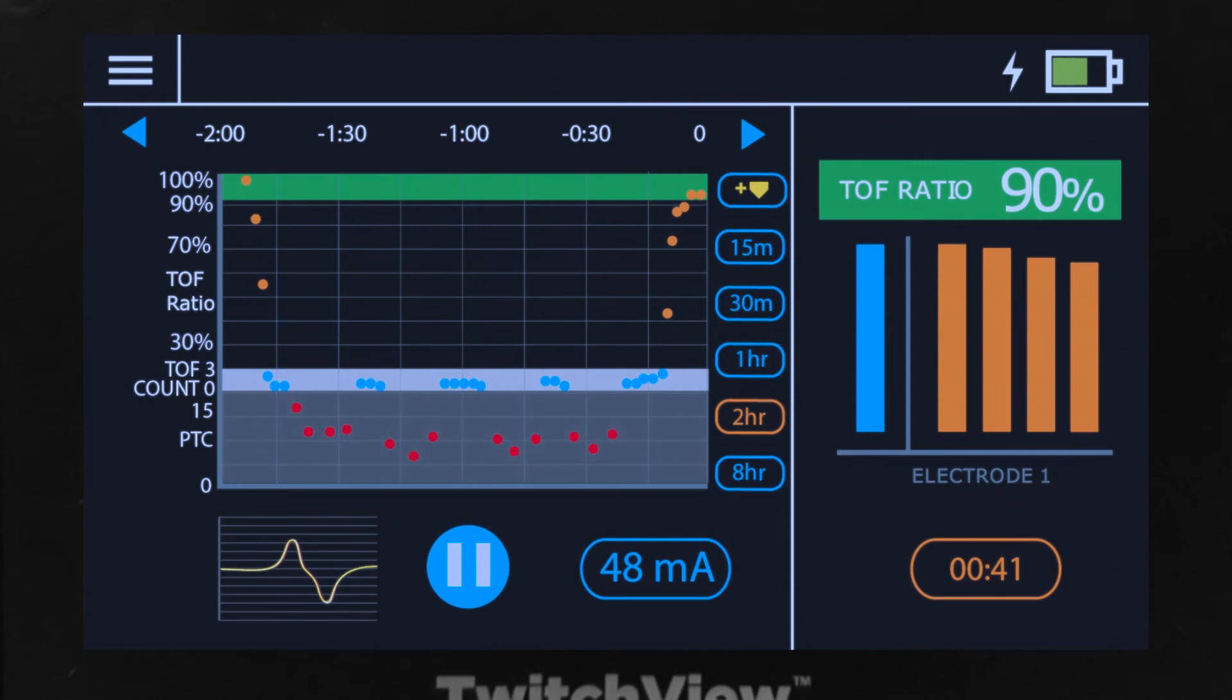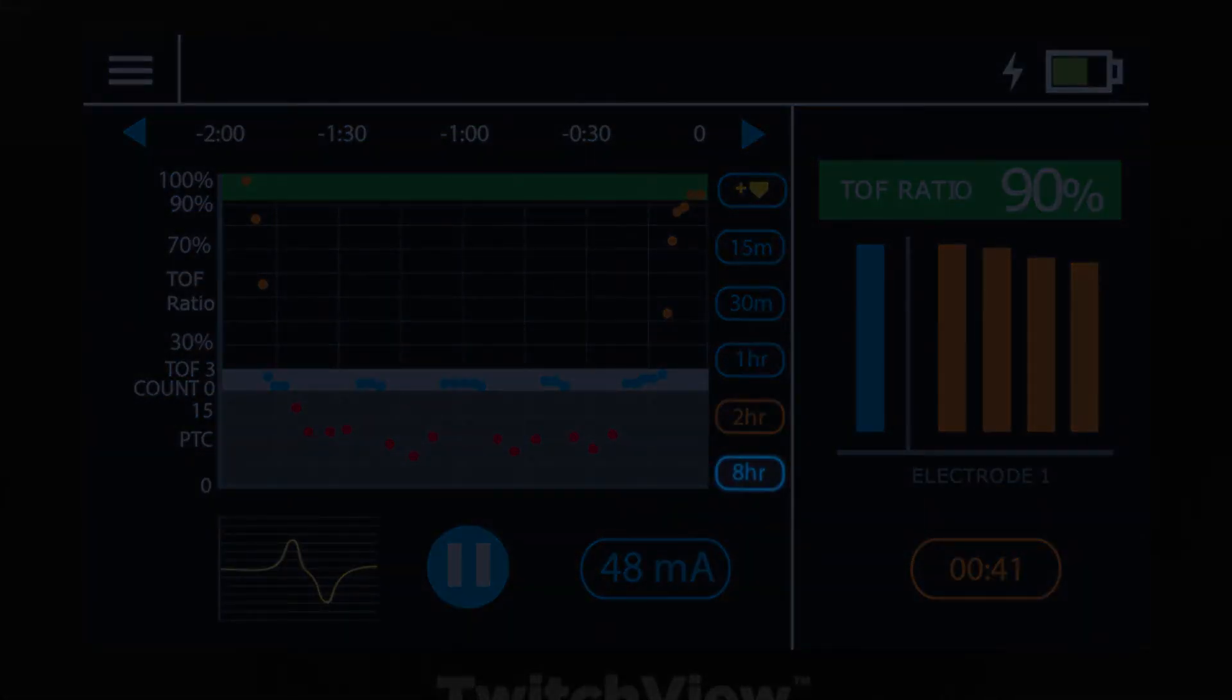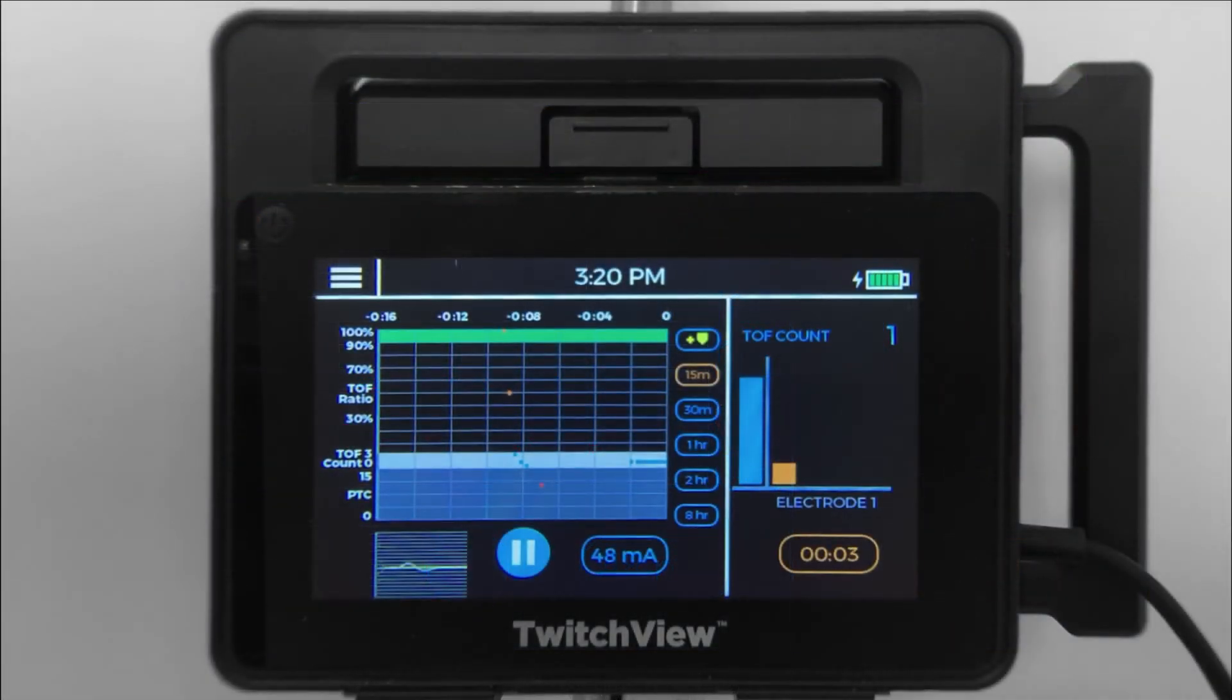The trend plot can be scaled to display short windows of time down to 15 minutes and longer windows of time up to 8 hours. During longer cases, you can scroll back to view earlier periods of time.